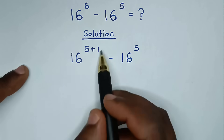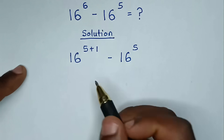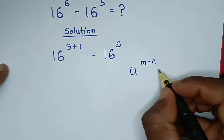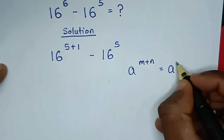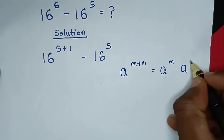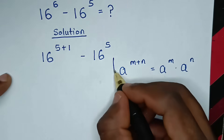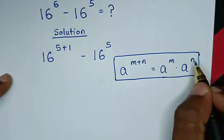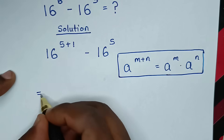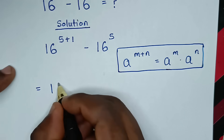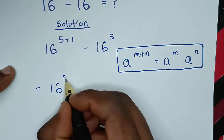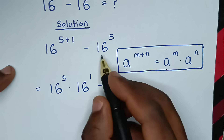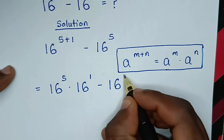Then in the next step, from this part here, 16 power of 5 plus 1 is in the form of the rule a power of m plus n, which is equal to a power of m times a power of n. So from this rule, we apply this form. Then it will be equal to 16 power of 5 times 16 power of 1, then minus 16 power of 5.